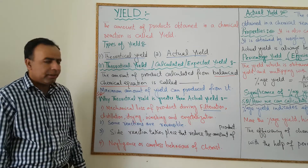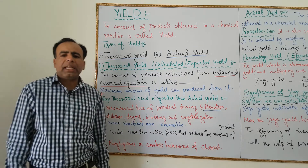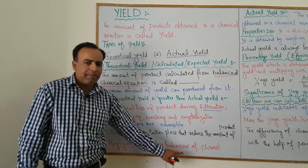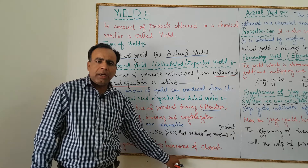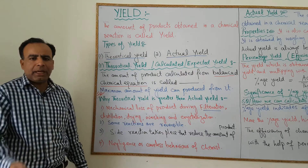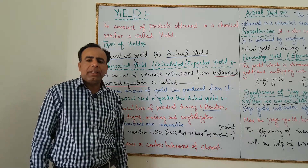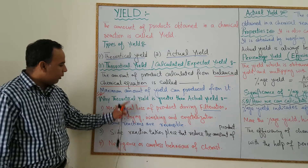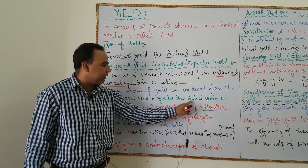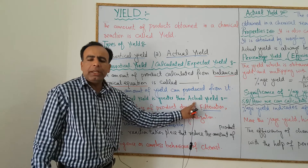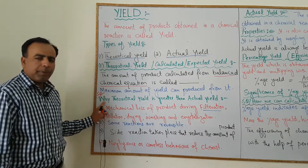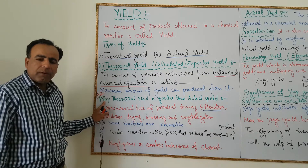The last reason is carelessness or negligence on the part of the chemist during calculations or while obtaining a product from a chemical reaction. These are the four reasons why theoretical yield is always greater than actual yield. This is an important short question from an exam point of view.